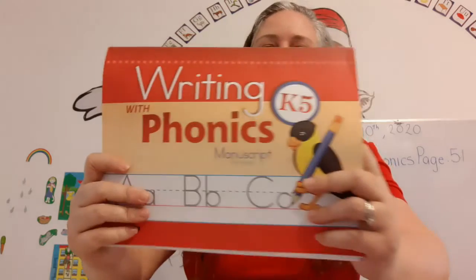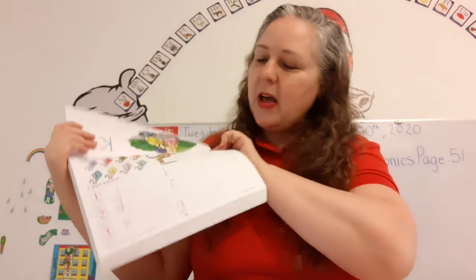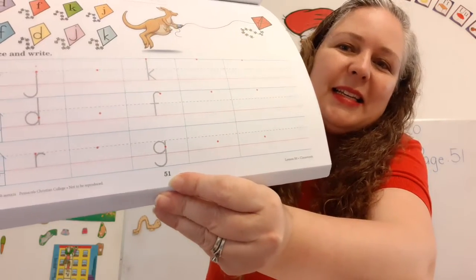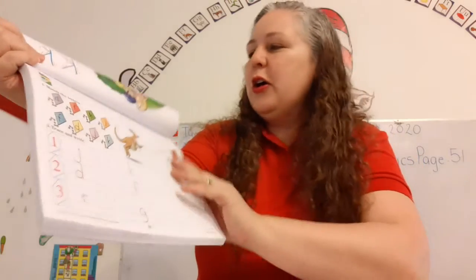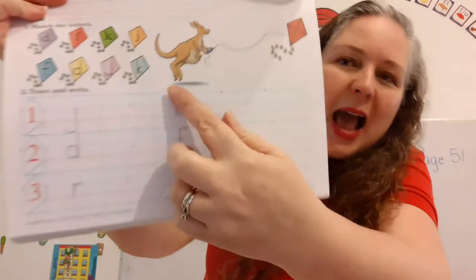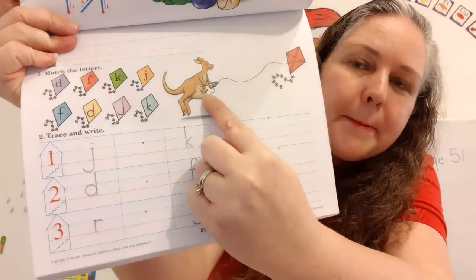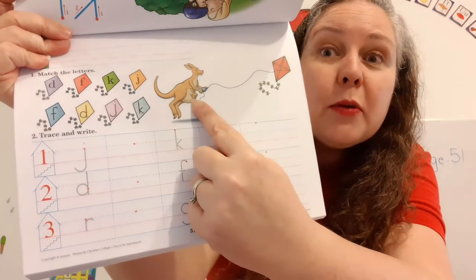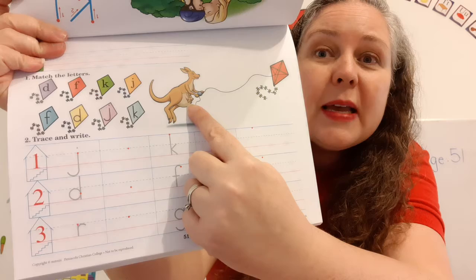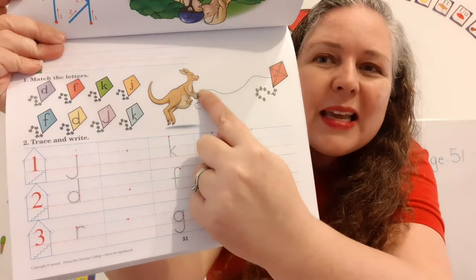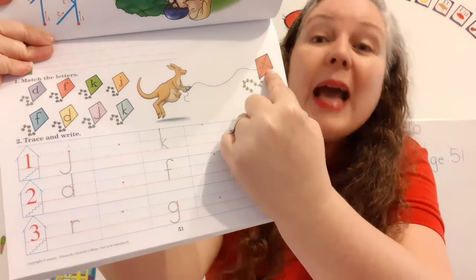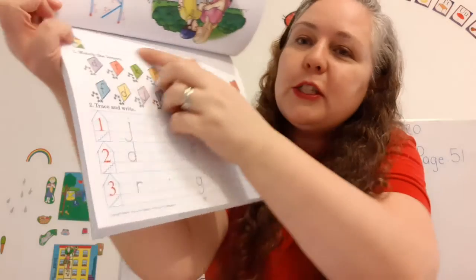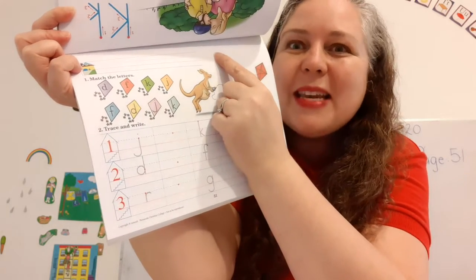You guys are making wonderful progress. Writing with Phonics — let's find page 51. Look what I see: it's a mommy kangaroo and a baby kangaroo. The baby kangaroo is inside the mother's pouch. Do you know what a baby kangaroo is called? A baby kangaroo is a joey. And look, the kangaroo is flying a kite. Look at all the different colored kites. Don't forget to write your name at the top, nice and neat.